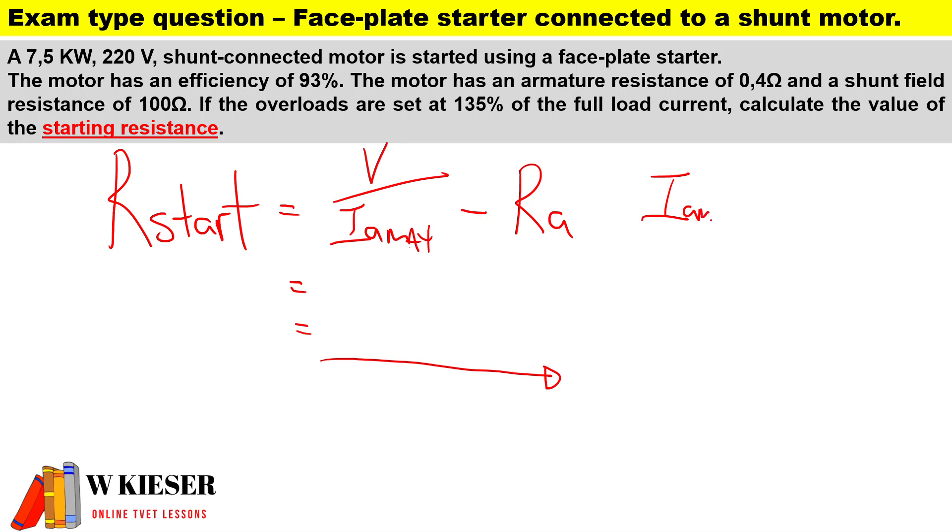Just to show you how we'll calculate I_a_max ahead of time: To calculate the maximum armature current, I will take the overload which is set at 135%, divide that by 100, and then multiply it by I_a. That will give us I_a_max.